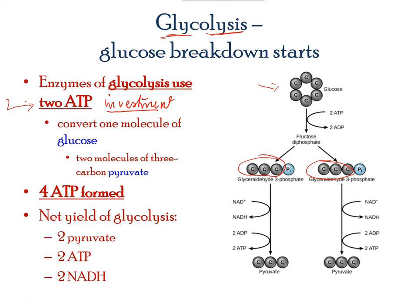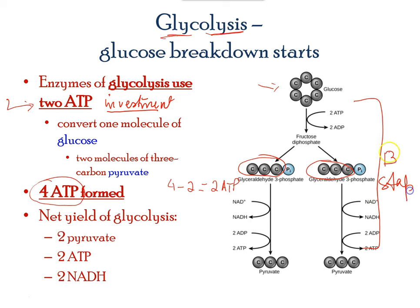In glycolysis alone, four ATPs are formed, giving a net gain of two ATP molecules. The reaction involves at least 13 steps, and at the end, one glucose molecule yields two pyruvate molecules — the three-carbon molecule. Two NADH electron carriers are also released, which will be used in the electron transport chain.